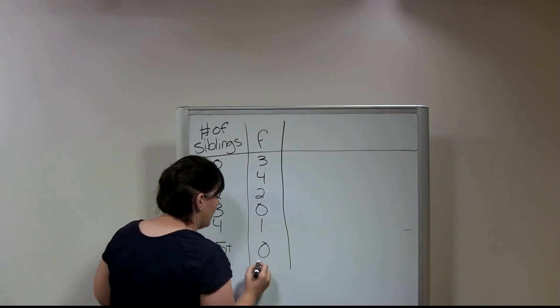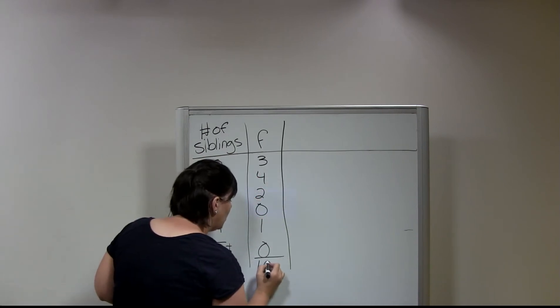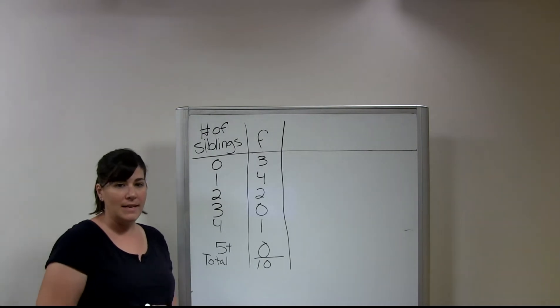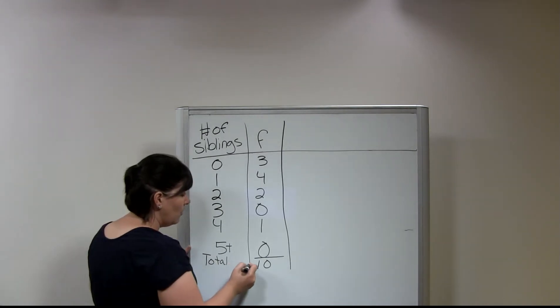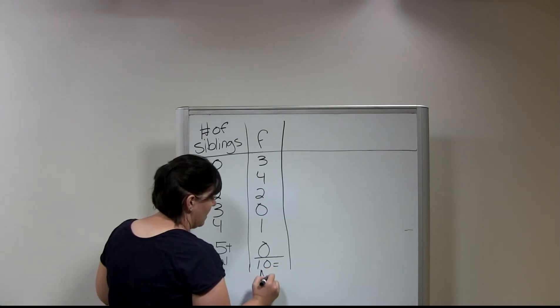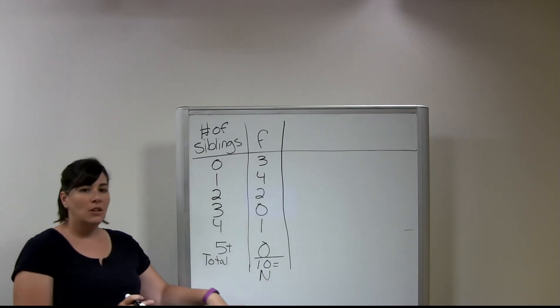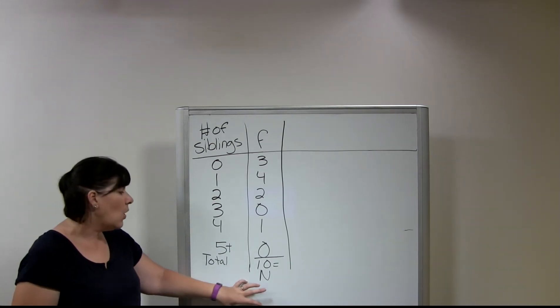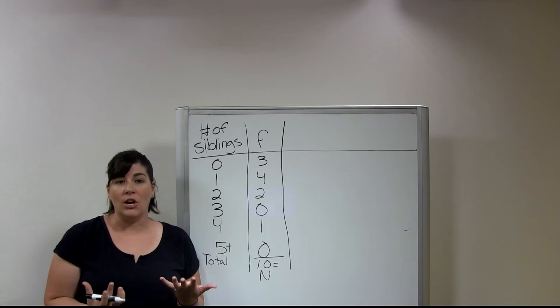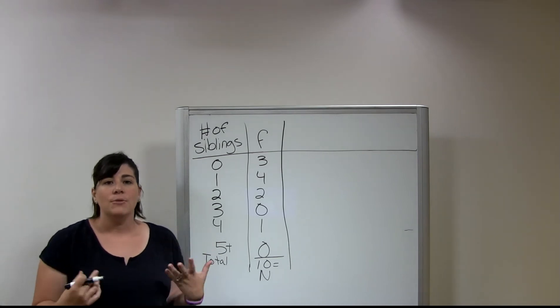So for our data, for simplicity's sake, we are going to say that three people have zero siblings, four people have one sibling, two people have two siblings, zero people have three, one person has four, and zero people have five plus. So then if I total all this up, I have three, four, five, six, seven, eight, nine, ten. So I have a total of ten respondents here. And so this ten, this total, is also known as N. So in all of our statistical calculations, this ten or this total is represented by the letter N. So N equals total.